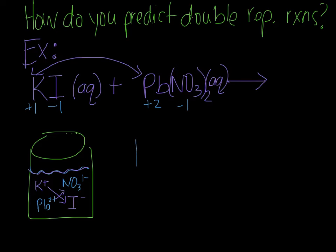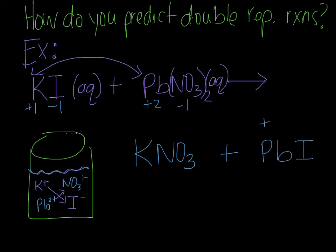Potassium is going to bond with nitrate. A plus one and a negative one don't need subscripts, so that stays KNO3. The other product is lead and iodine. Lead has a plus two and iodine has a negative one, so we bring that two down to get PbI2. So these are the two products that could be forming. Now the question is: did I form a precipitate? Which one of these, if any, is a solid? To find out, I'm going to look at my solubility rules.